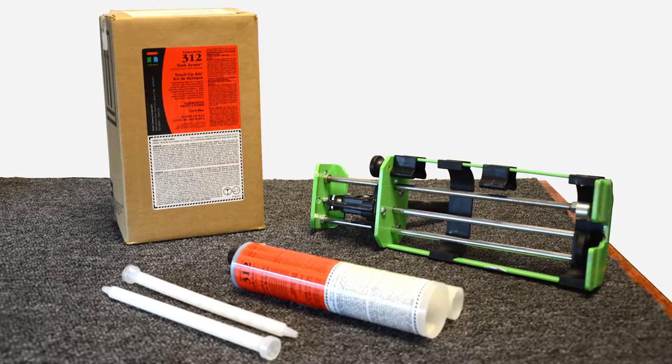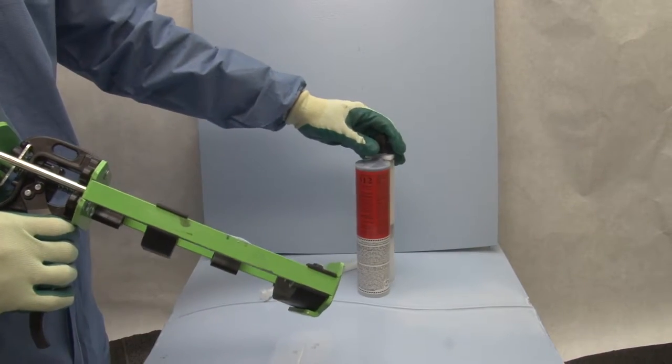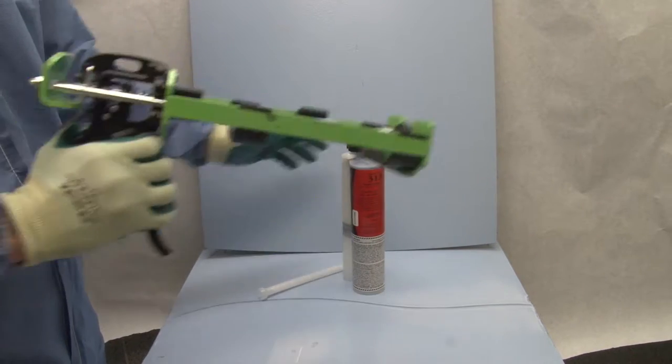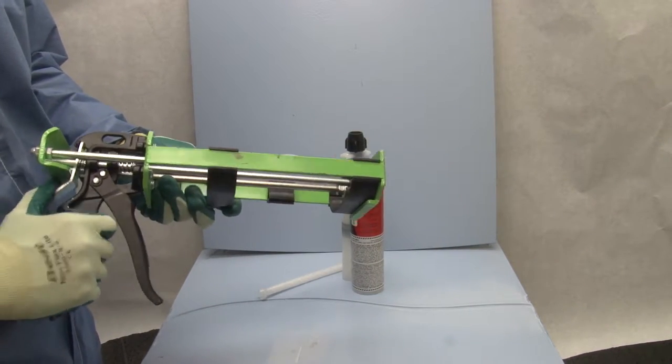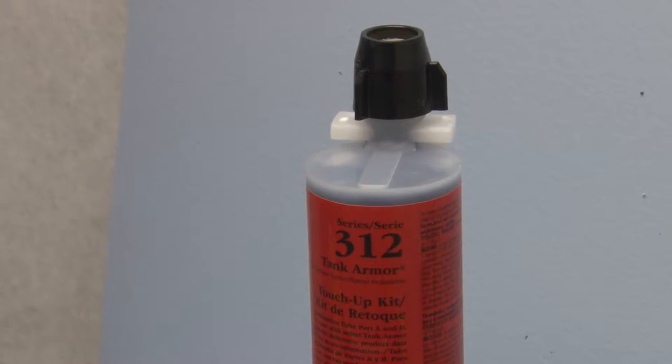Packaged in a convenient two-part dispenser tube, this product makes repairing or touching up Tank Armor lining systems a quick and simple process that can limit downtime and quickly return tanks to service.